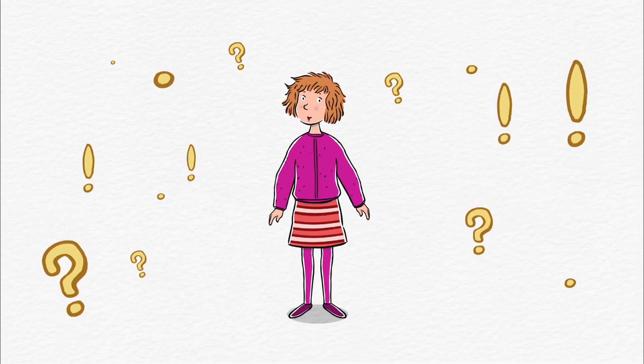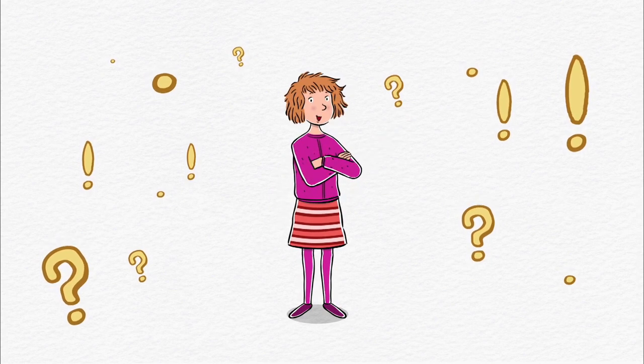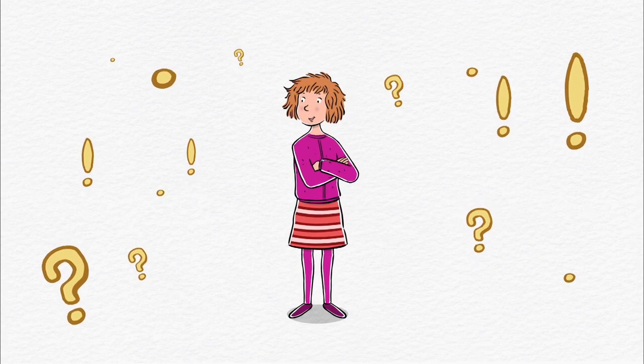Punctuation. Punctuation marks are symbols you use in writing that make what you're saying clear to the people who read it. In English, there are three punctuation marks you can use at the end of a sentence.